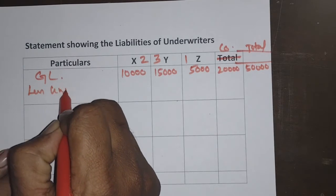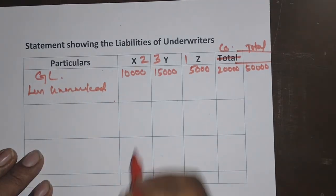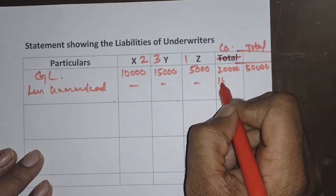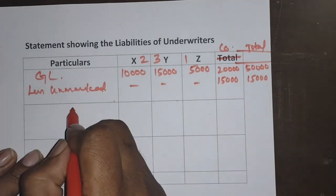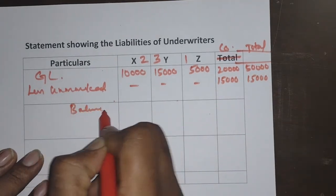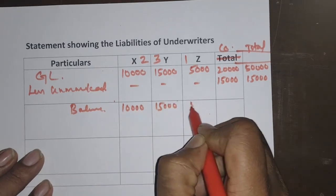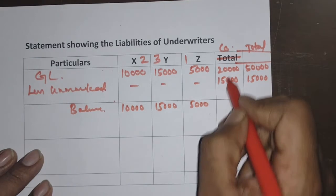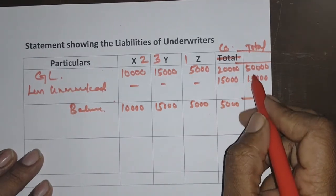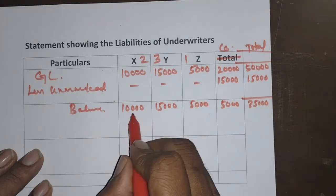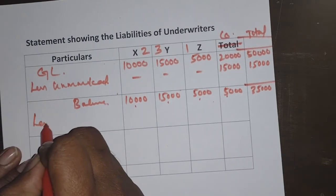Less unmarked application: the 15,000 unmarked shares are distributed to the company column only. After subtracting 15,000 from the company column: X remains 10,000, Y remains 15,000, Z remains 5,000, and company becomes 20,000 minus 15,000 = 5,000. Total is 35,000.